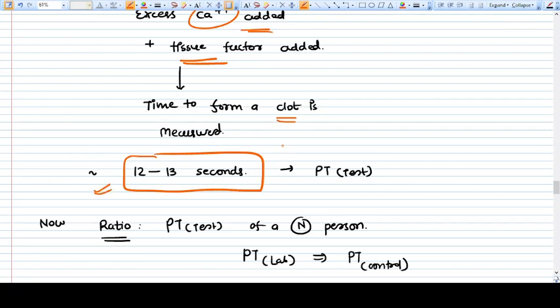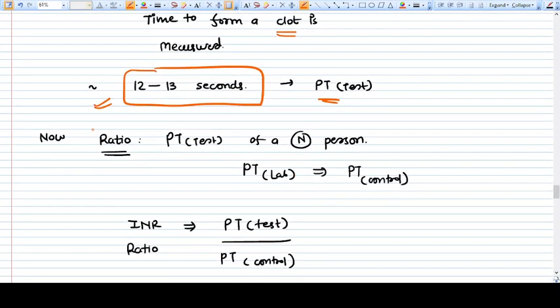It will take 12 to 13 seconds, which is a normal time. INR ratio is comparing the PT of a test to a PT of a normal person, to standardize the lab work.